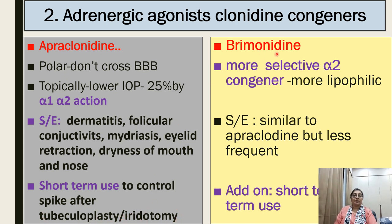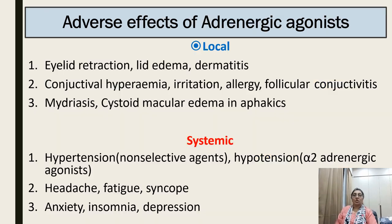Brimonidine is more selective to alpha-2 receptors and more lipophilic, so it easily penetrates the cornea. Its side effects are similar to apraclonidine but less frequent. It can be used as add-on therapy for both short-term and long-term use.